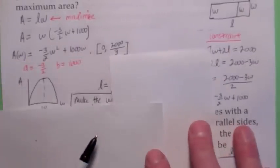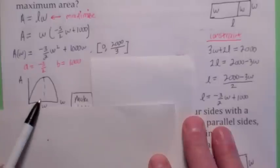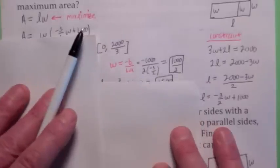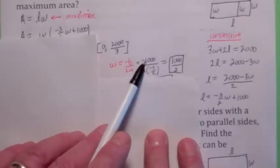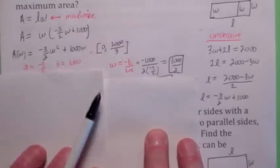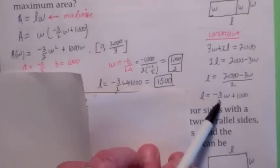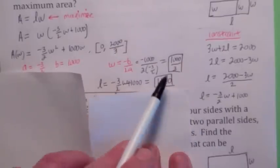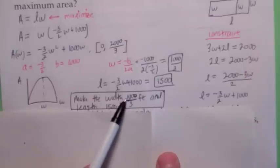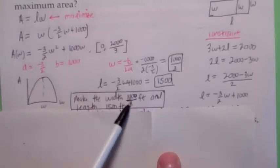We're going to ask about the vertex. This area function gives the area in terms of the width, so the w coordinate of the vertex gives the width that maximizes area. w equals negative b over 2a, which is negative 1,000 over 2 times negative 3 halves — since a is negative 3 halves — giving w equals 1,000 over 3. To find the corresponding length, plug 1,000 over 3 back in for w, and that turns out to be 1,500. So to get the maximum area, make the width 1,000 over 3 feet and the length 1,500 feet. If it asks for the maximum area, plug 1,000 over 3 into the area function.